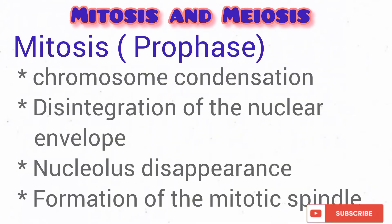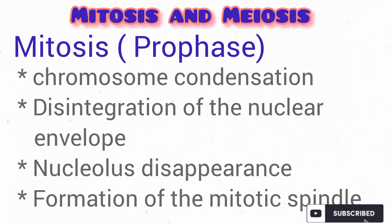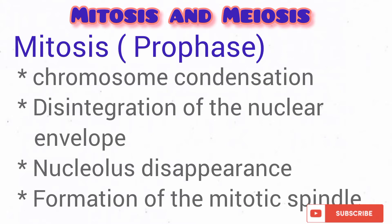The following events occur in the prophase stage: chromosome condensation, disintegration of the nuclear envelope, nucleolus disintegration or disappearance, and the formation of the mitotic spindle.